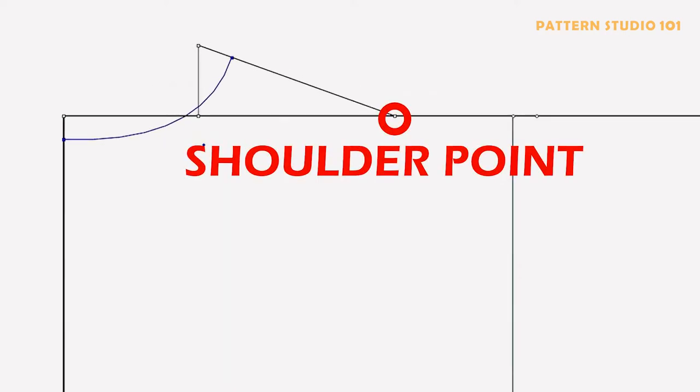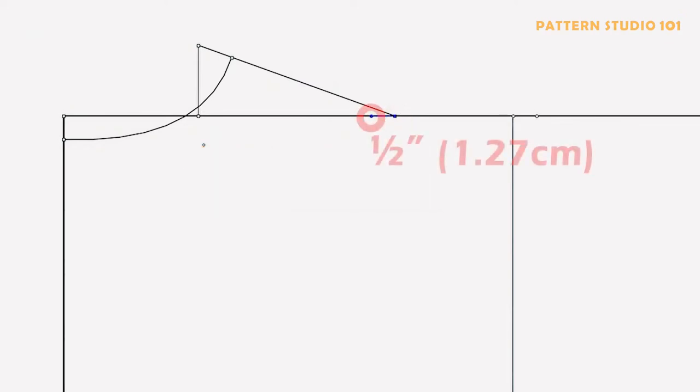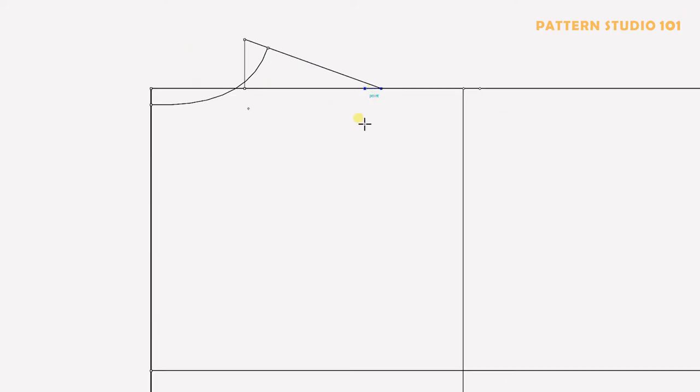From the shoulder point, go in half of an inch and draw a guide line for the cross back. Then you can draw an armhole curve.